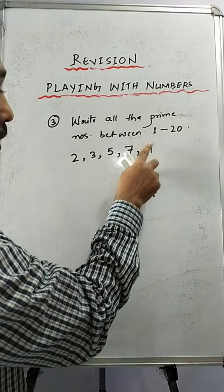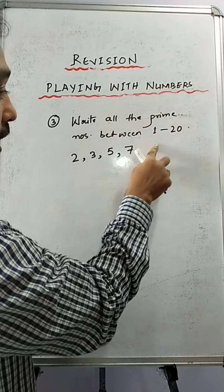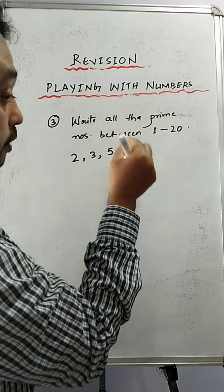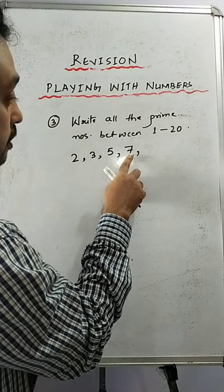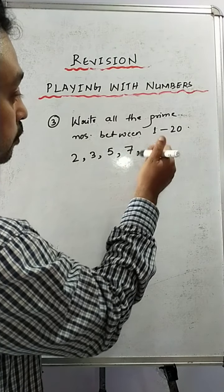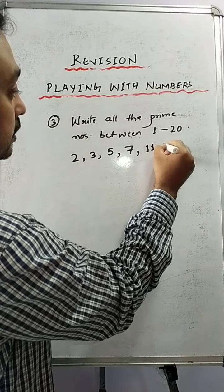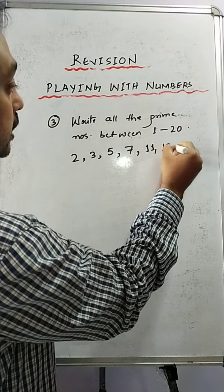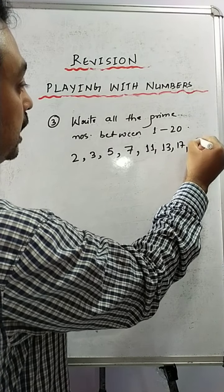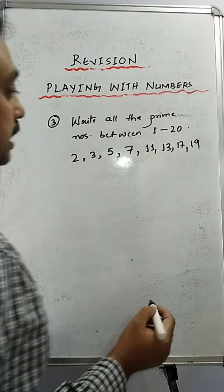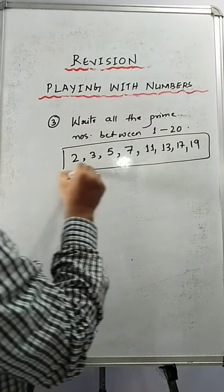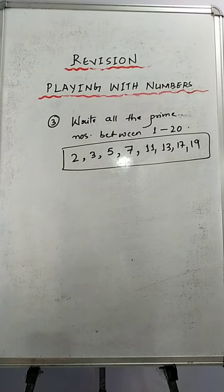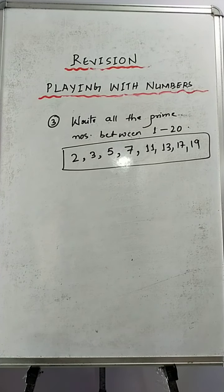9 is not a prime number because 9 is also divisible by 3, so do not make this mistake. After 7, the next prime number is 11, then 13, then 17, and at last 19. So these are all the prime numbers between 1 to 20.